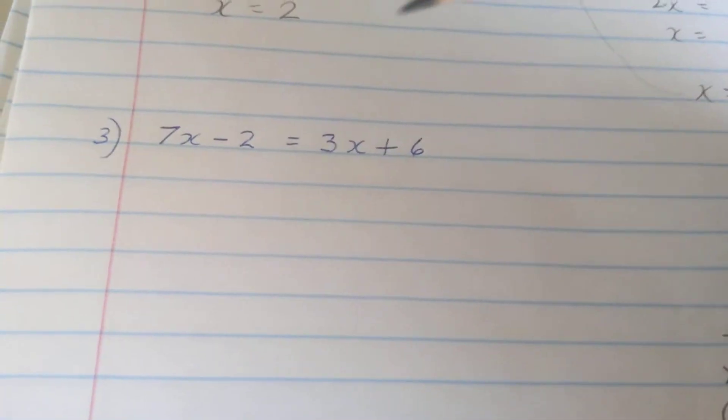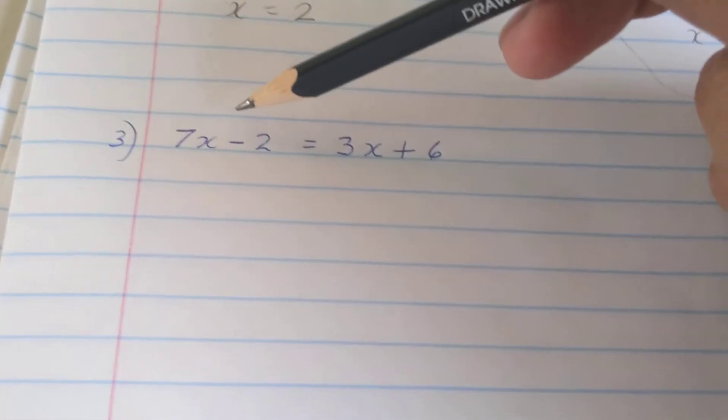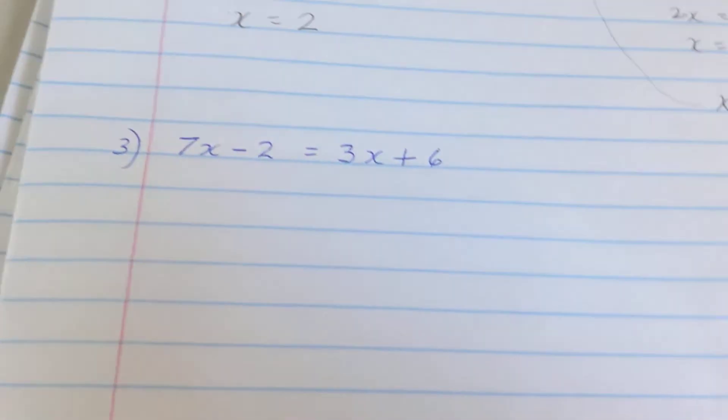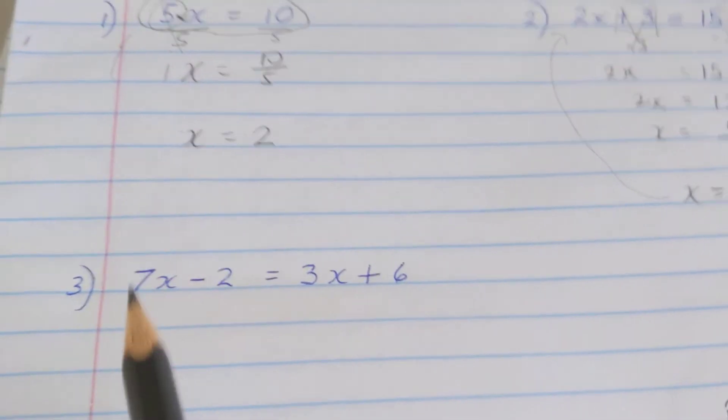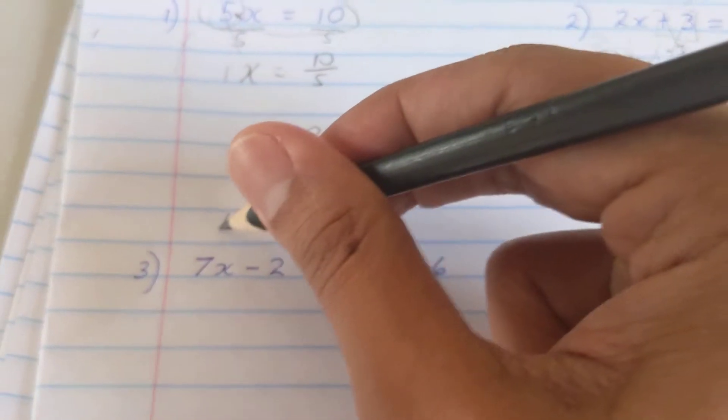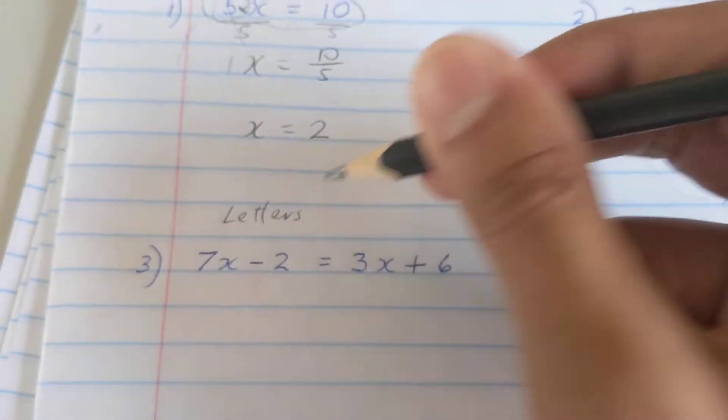The same rules will apply. If I pick a side for letters, the variables, the terms with the letters in them, I normally use that side because we read from left to right, but you could use any side. I want this side to have all the pieces with letters in it.